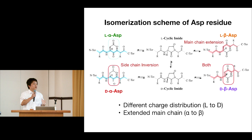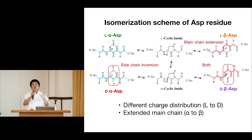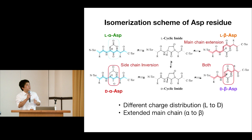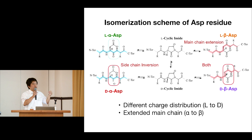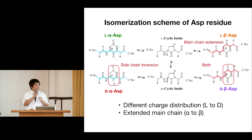What happens after formation of the abnormal aspartate? From L to D, the side chain directs to the opposite side. Under physiological conditions, the side chain of aspartate carries a negative charge — so the direction of that negative charge in the protein points to a different side, altering the protein structure and interactions. From alpha to beta aspartate, the chain of the protein is extended; increasing the carbon number increases hydrophobicity, which also impacts protein structure and stability. So D-beta aspartate has both effects — presumably it is the most toxic for the protein.